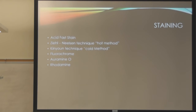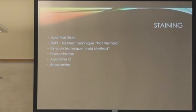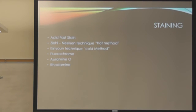Staining-wise, the acid-fast stain is your preliminary identification. However, a negative result doesn't eliminate the possibility of tuberculosis because the sensitivity isn't the best. Within acid-fast staining, you have a hot method involving a hot plate, and a cold method where you don't heat the samples. You also have individual stains — fluorochrome and auramine. The auramine will stain yellow-green, and the counterstain will stain red.